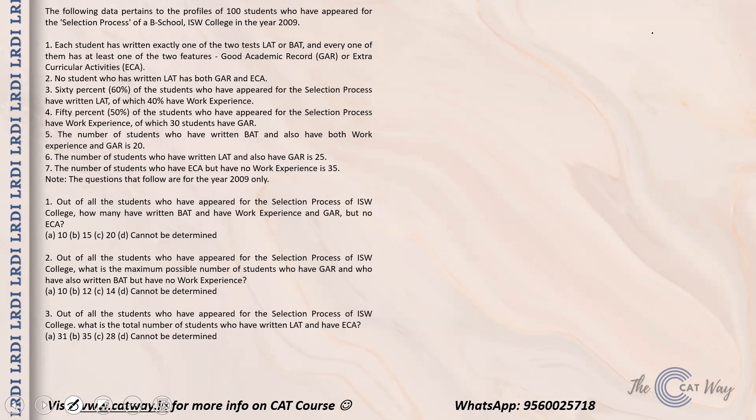A person writing LAT can have a good academic record, extracurricular activity, or both. The second condition states that no student who has written LAT has both GAR and ECA. So a LAT writer can have only GAR or only ECA. For a BAT writer, they can have only GAR, only ECA, or both together.